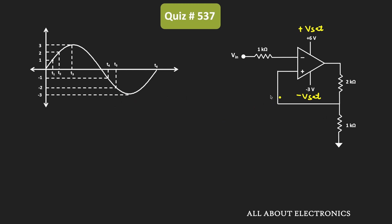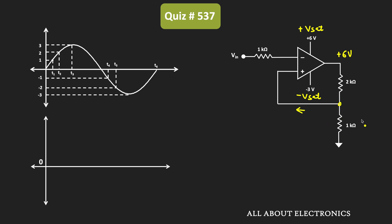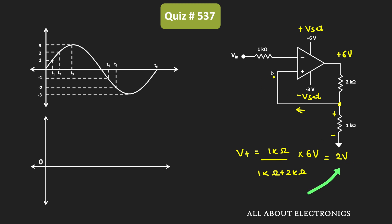Initially, let's assume the output of this op-amp is +6V. Since this is an ideal op-amp, no current flows into the op-amp terminals, so the voltage at the non-inverting node can be found using the voltage divider rule. V+ equals 1kΩ divided by (1kΩ + 2kΩ) times 6V, which equals +2V.